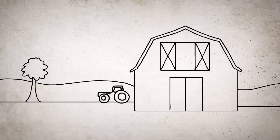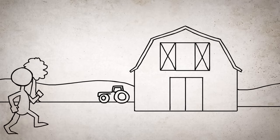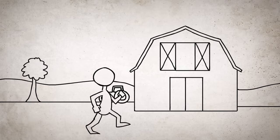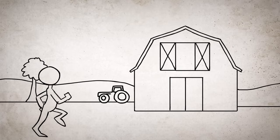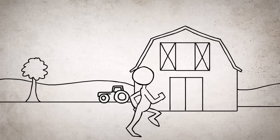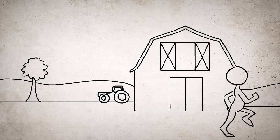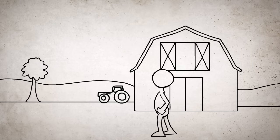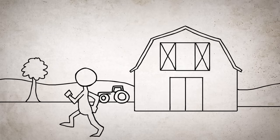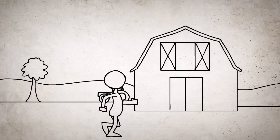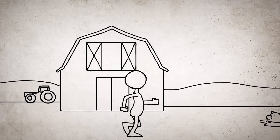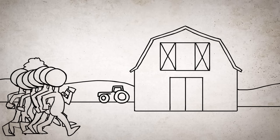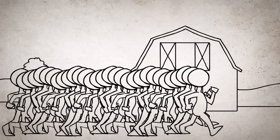When making a character walk across a screen, some people will make the walk cycle first and move the cycle across the screen. While this will save you some work, it can sometimes look mechanical and slide-y, like a video game character. A better solution is to hold the cycle in place and have the background move instead. Otherwise, you would animate the whole sequence from start to finish.